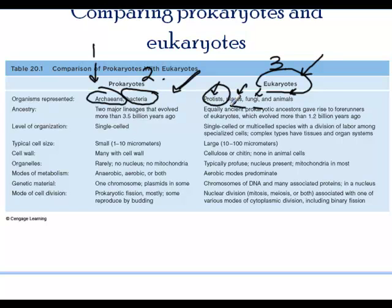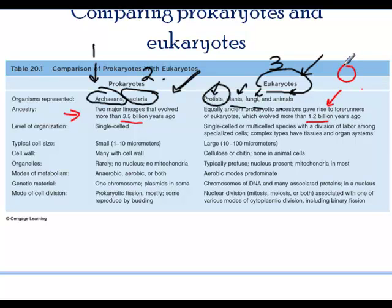These four kingdoms belong within the domain eukaryotes. If you are reading an old book, the classification was done a little differently — I'm giving you the one accepted today. The ancestry for archaea and bacteria is much older, 3.5 billion years old, compared to eukaryotes at only 1.2 billion years. The reason? The presence of oxygen — oxygen was not present in the earlier days.